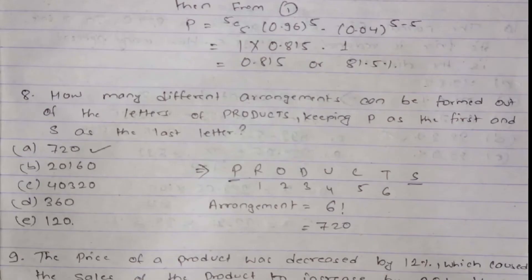Question eight is from permutation and combination: how many different arrangements can be formed out of the letters of 'PRODUCTS' keeping P as the first and S as the last letter? Since P and S are always fixed in their first and last positions, the remaining six different letters can be arranged in 6 factorial ways, which equals 720. The correct answer is option A.